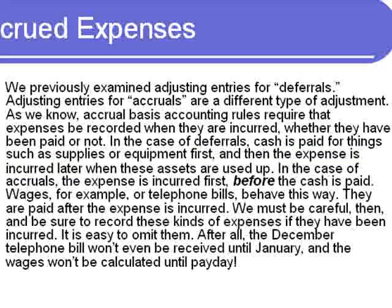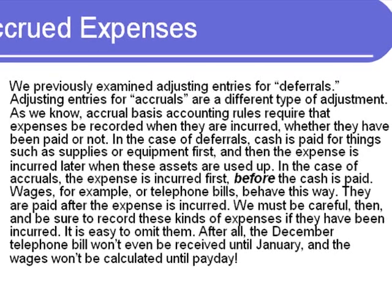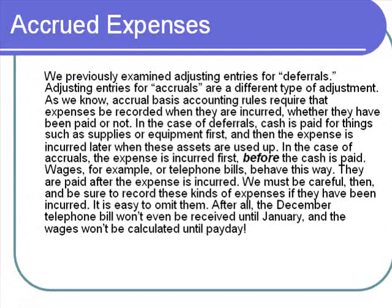In the case of accruals, the expenses are incurred first before the cash is paid. Wages or telephone bills, for example, behave this way — they are paid after the expenses are incurred, that is, after the employees have worked for us or after we have used the utility service. We must be careful to record these kinds of expenses if they have been incurred, as it's easy to omit them. After all, the December telephone bill won't even be received until January, and wages won't be calculated until payday. But accrual basis accounting requires us to estimate or calculate the amount of the expense incurred and record it in the current period. This will require an adjusting entry.